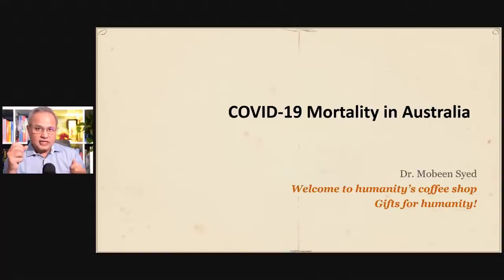They looked at data in two ways. One is deaths due to COVID — death rate from COVID — and then deaths with COVID, where the person had COVID but some other disease was the primary cause of death, not COVID. They neatly separated those two categories.